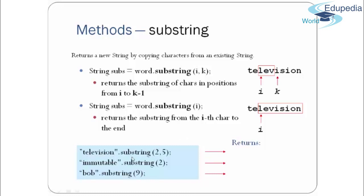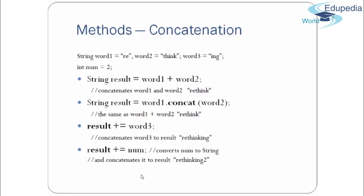Another method is concatenation. For example, with word1 = "re", word2 = "think", word3 = "ing", and int num = 2, we can create String result = word1 + word2, which concatenates "re" and "think" to give "rethink". You can also use the .concat() method, passing word2 to get the same result. Or you can use the plus-equals (+=) operator for concatenation.